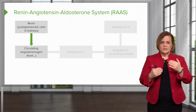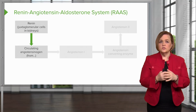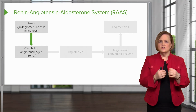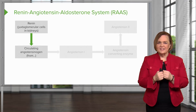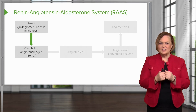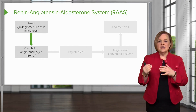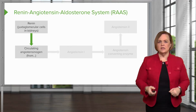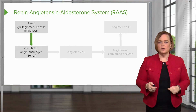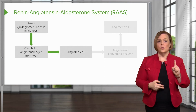Renin connects up with circulating angiotensinogen. When you look at your downloadable section, where does angiotensinogen come from? What liver-colored organ does angiotensinogen come from? When renin and the circulating angiotensinogen meet up, you end up with a different product: angiotensin 1.